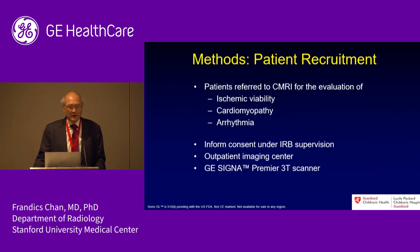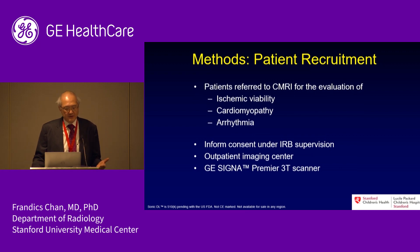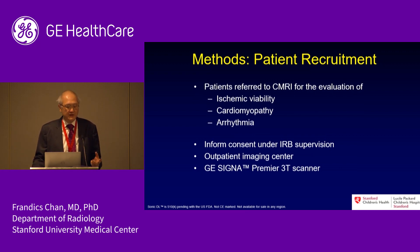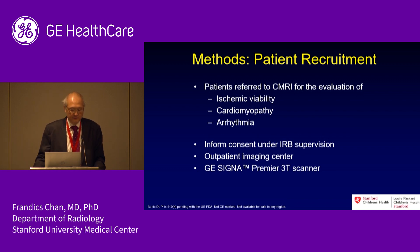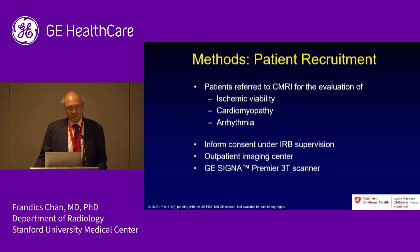We recruited patients referred to our cardiac MRI on the adult side — those indicated for ischemic viability study, cardiomyopathy workup, and arrhythmia, including people with syncope coming in to look for delayed enhancement. This was done under informed consent and IRB supervision, in an outpatient center setting.